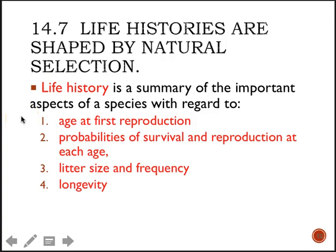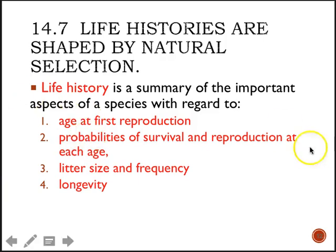There are four important parts. The first is: how old is this population on average when they first reproduce? The second is: what is the probability of surviving and reproducing at every age they are alive? When I say age, it doesn't necessarily mean years — it can mean months, depending on the species.